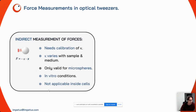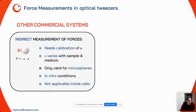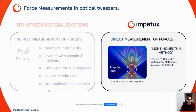Some problems arise because the trap stiffness kappa varies depending on the sample and medium conditions, so if you change experimental conditions you need to recalibrate. Furthermore, this indirect method is only valid for spherical objects and is basically limited to in vitro conditions — it cannot be applied inside complex media like cells or tissues. This is what other commercial systems do to measure forces, but we use a different approach: a direct method called the light momentum method.